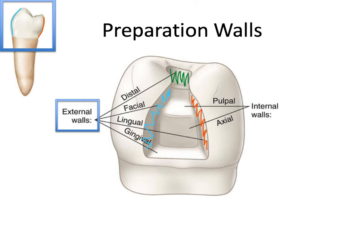There's one more outer wall to discuss. The wall down here is a bit unusual because we don't have a true 'gingival surface' of a tooth. But if you imagine the tooth crown as a six-sided cube, the imaginary bottom surface would be the gingival surface. So this floor of a Class 2 cavity preparation is called the gingival wall, or more commonly the gingival floor, because it runs parallel to the floor.